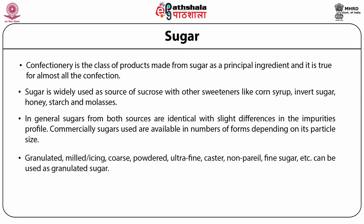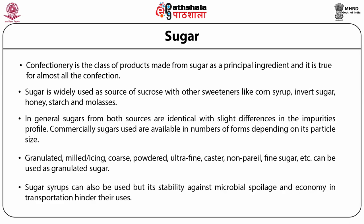Forms of sugar include granulated, milled or icing, coarse, powdered, ultrafine, castor, and fine sugar, which can be used as granulated sugar. Sugar syrup can also be used, but its stability against microbial spoilage and economy in transportation hinders its use.